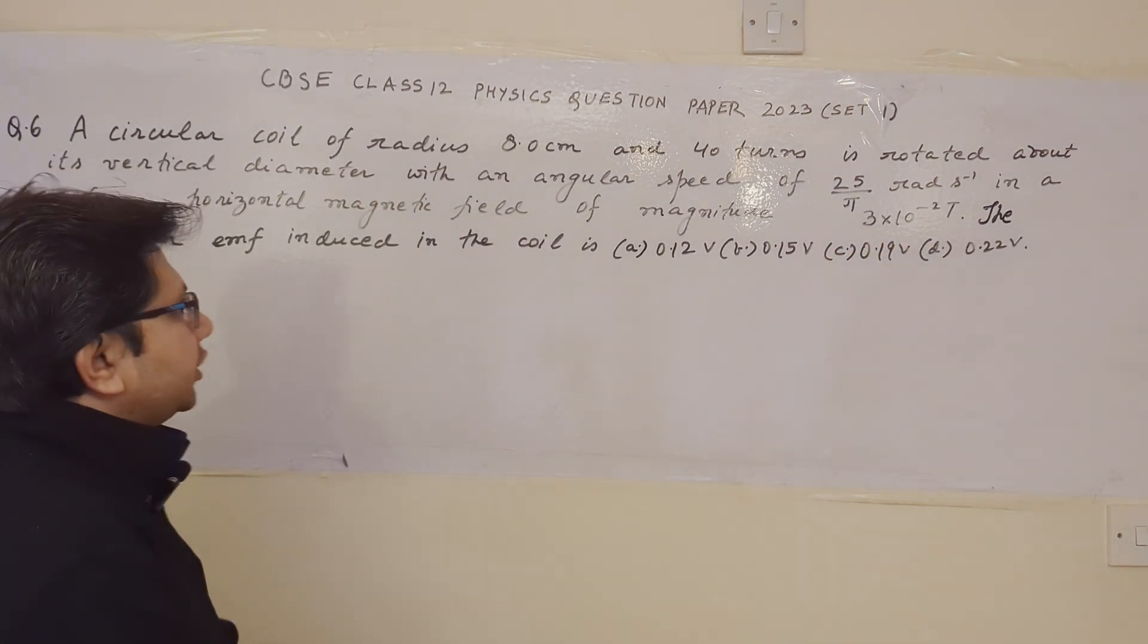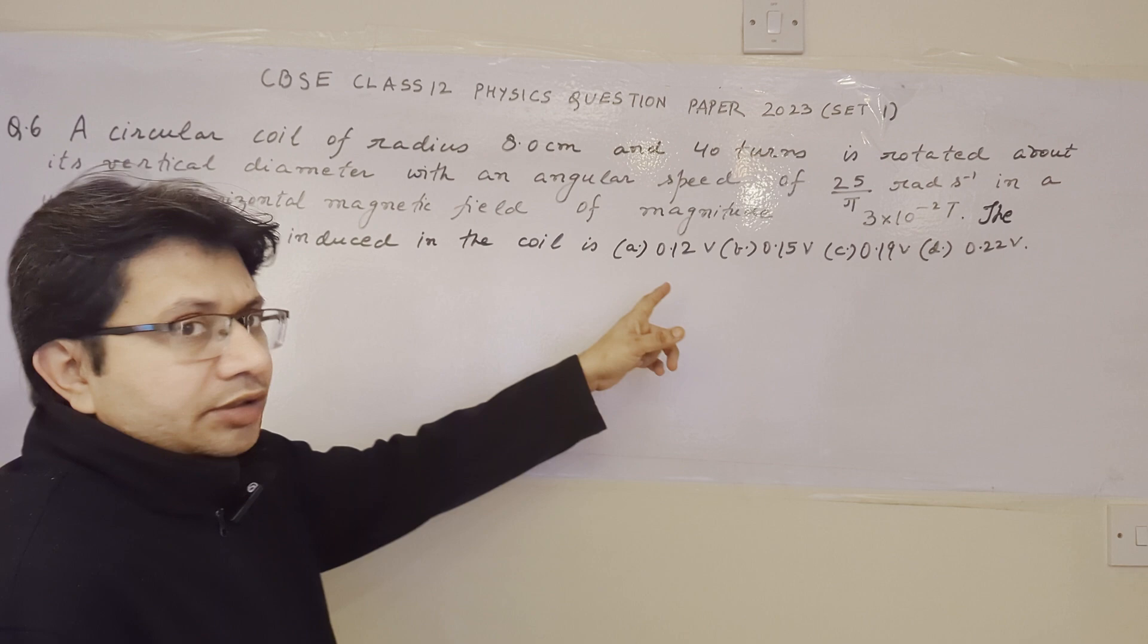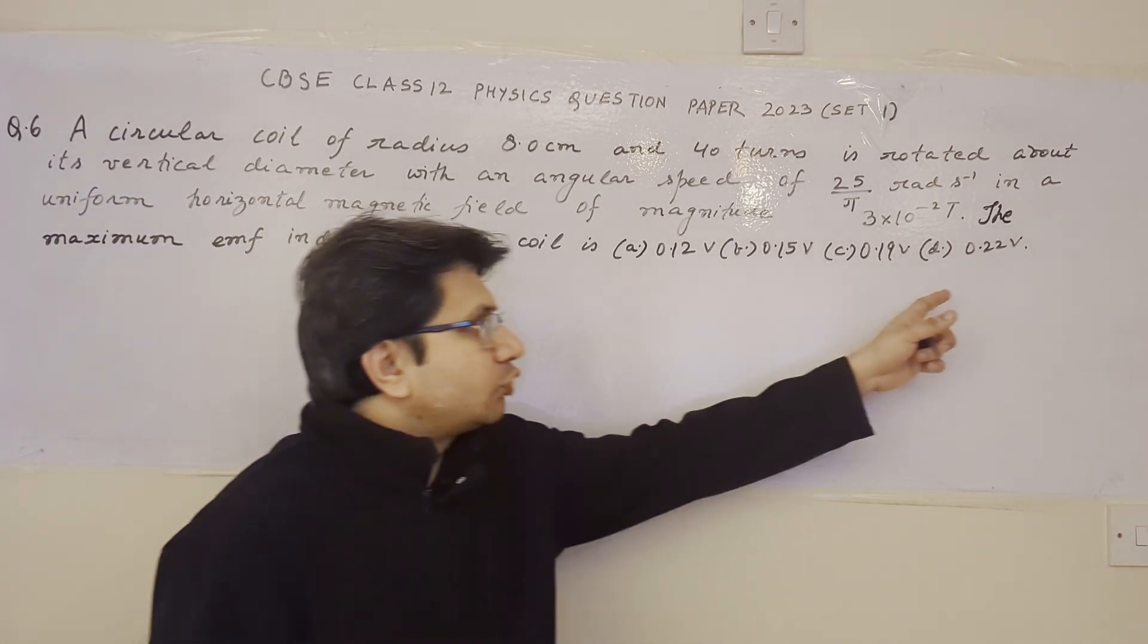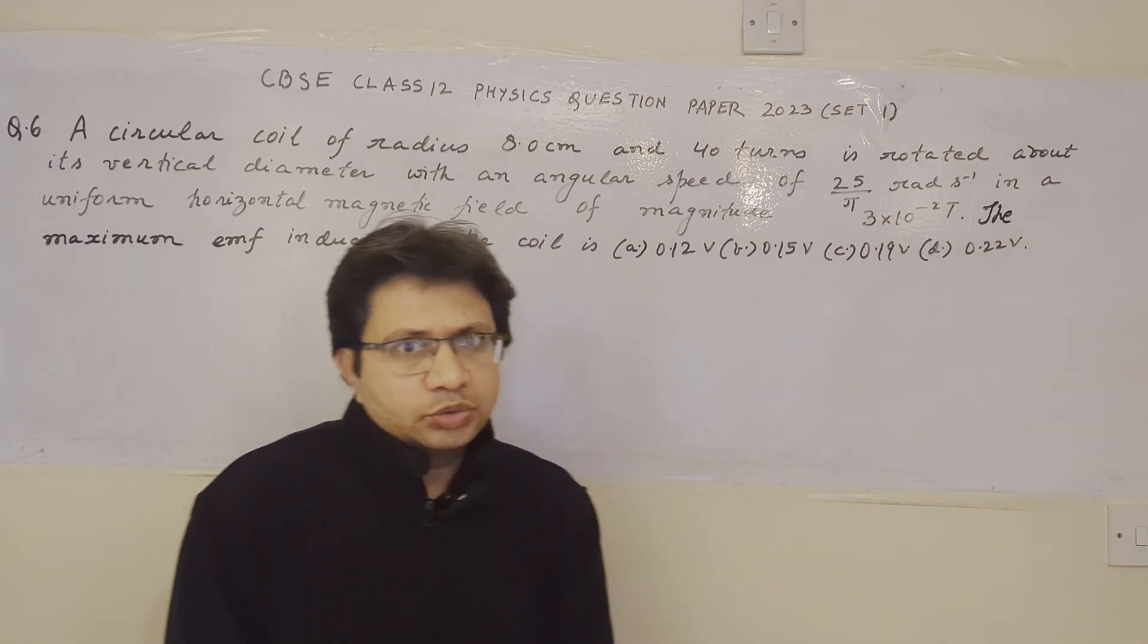The maximum EMF induced in the coil is option A 0.12 volts, option B 0.15 volts, option C 0.19 volts and option D 0.22 volts.